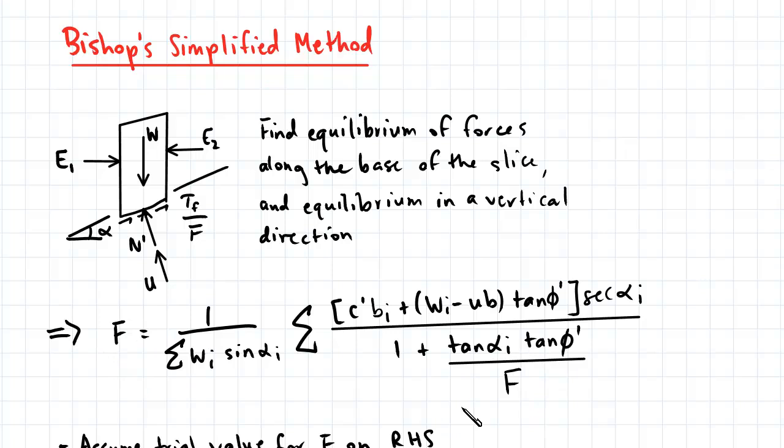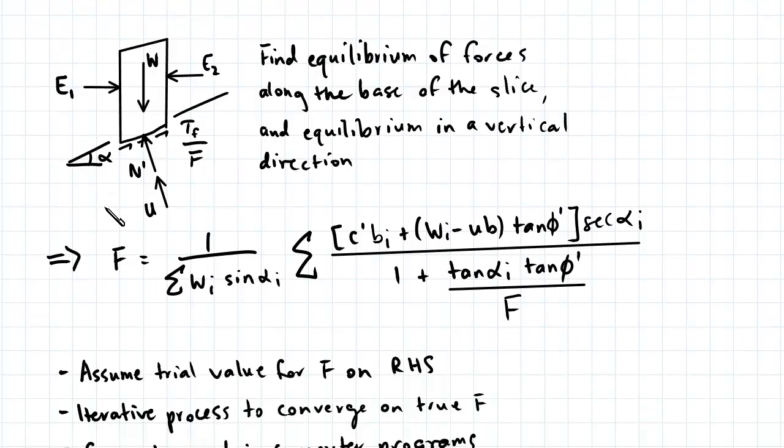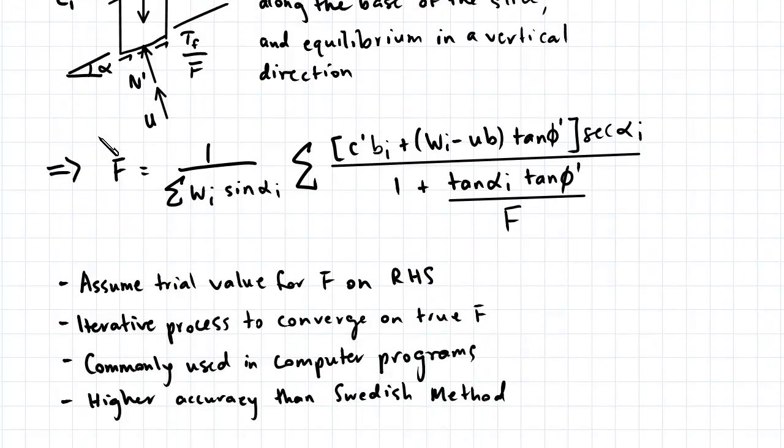The steps which we need to follow in Bishop's method is to first assume a trial value for F on the right-hand side, and then through an iterative process we converge onto the true value of F on the left-hand side for a trial circle.